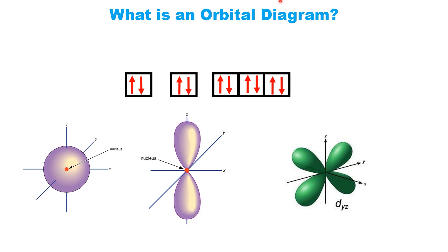What is an orbital diagram? An orbital diagram is a visual tool that shows us how electrons are organized within an atom's orbitals. In these diagrams, each box represents an orbital, essentially a region where we're most likely to find an electron.